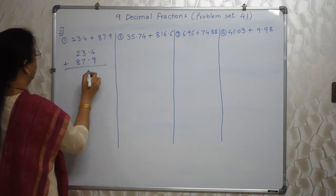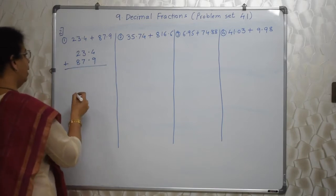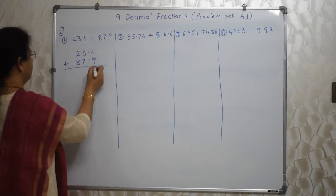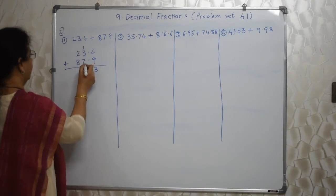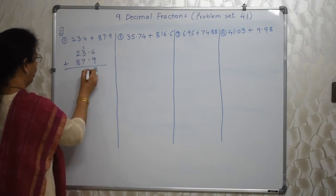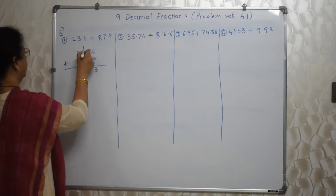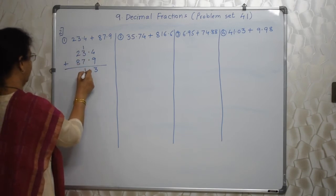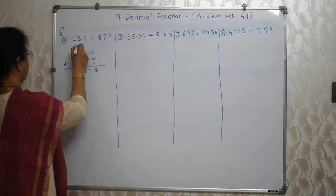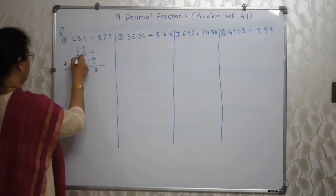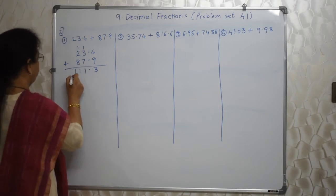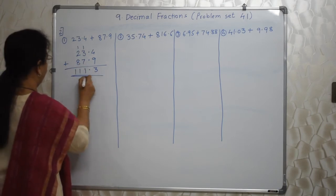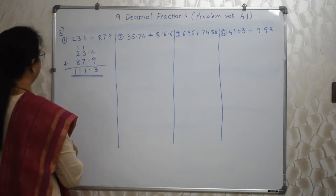Point ke niche point. Addition is very easy. 4 plus 9, 13. 1 carry. Point ke niche point. Aage baad. 1 plus 3, 4. 4 plus 7, 11. So 1 carry. 1 plus 2, 3. 3 plus 8, 11. So 111.3 is the answer.